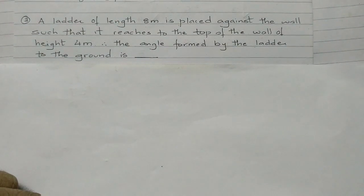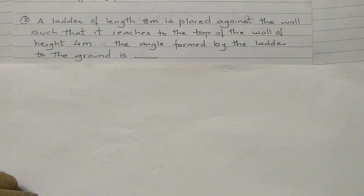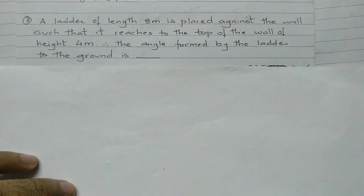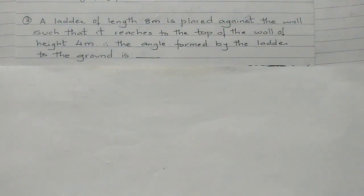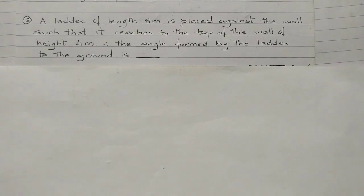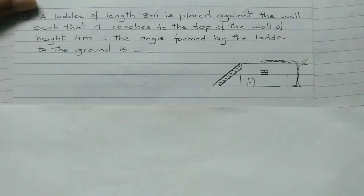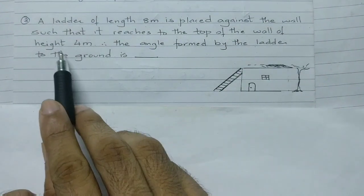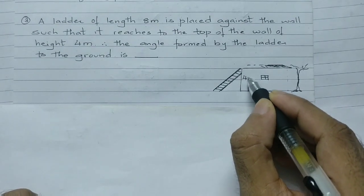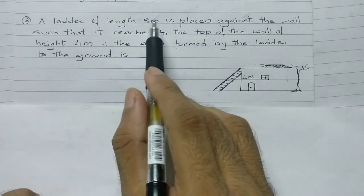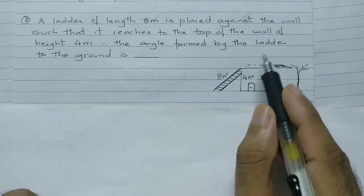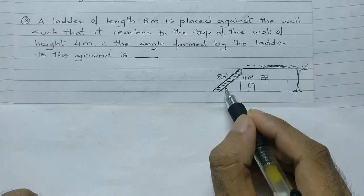Third question: a ladder of length 8 meters is placed against a wall such that it reaches the top of the wall of height 4 meters. Find the angle formed by the ladder with the ground. Let's draw the figure — the height of the wall is 4 meters, the length of the ladder is 8 meters, and we need to find the angle between the ladder and the ground.